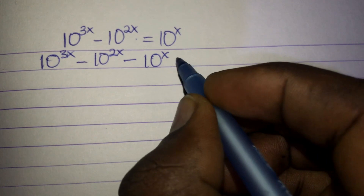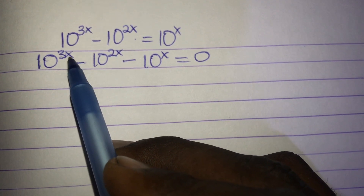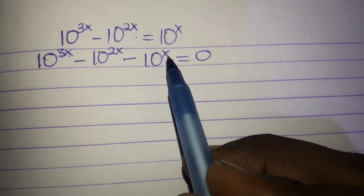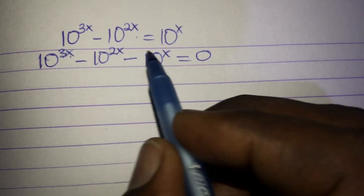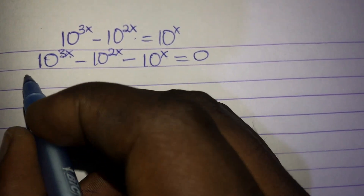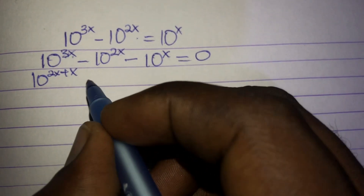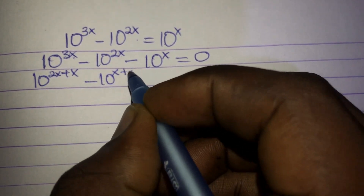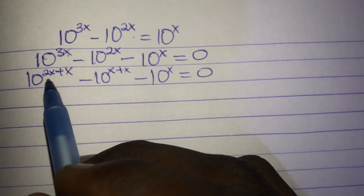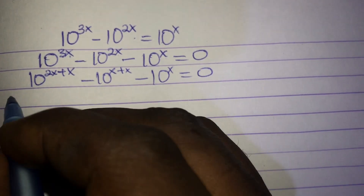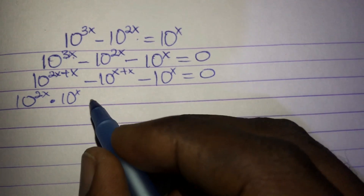We have 3x, 2x, and x as exponents. We can factor because x appears in each term. We can write 3x as 2x plus x, and x plus x. So: 10 exponent (2x + x) minus 10 exponent (x + x) minus 10 exponent x equals zero. From index laws, this means 10 exponent 2x times 10 exponent x, minus 10 exponent x times 10 exponent x, minus 10 exponent x equals zero.